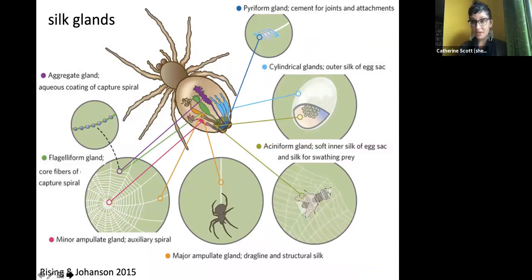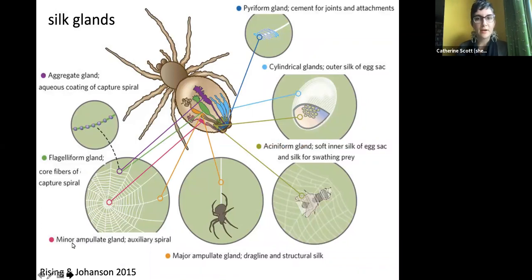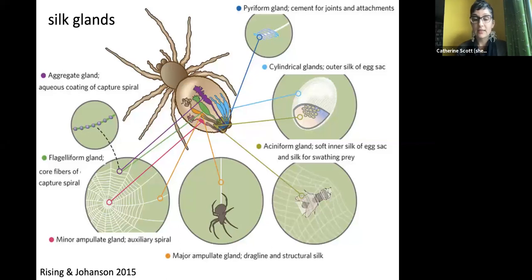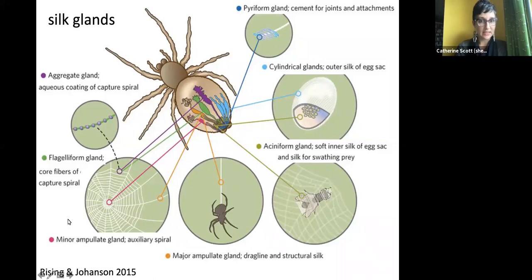One of the main features that makes a spider a spider is that they have silk glands in their abdomen. Other animals like insects can make silk, but they tend to make it in their head and secrete it through mouthparts. Spiders have a variety of silk glands in their abdomen, and each different gland makes different kinds of silk used for different purposes — making egg sacs, capturing prey, draglines, building webs, sticky silk, and wrapping prey.